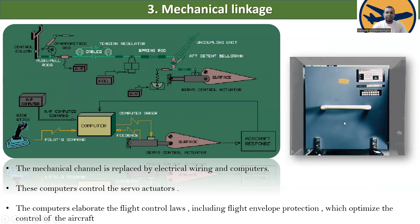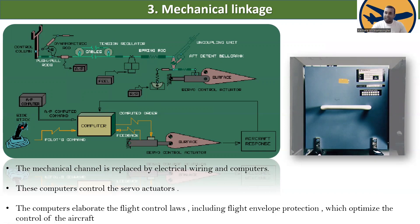These are the flight control computers, designed as avionics. Previously, the mechanical linkage included push-pull rods, tension regulators, cables, big rods, active bell cranks, and uncoupling units. All of these are now replaced by computerized commands. This results in significant weight saving, which is a key advantage of fly by wire.